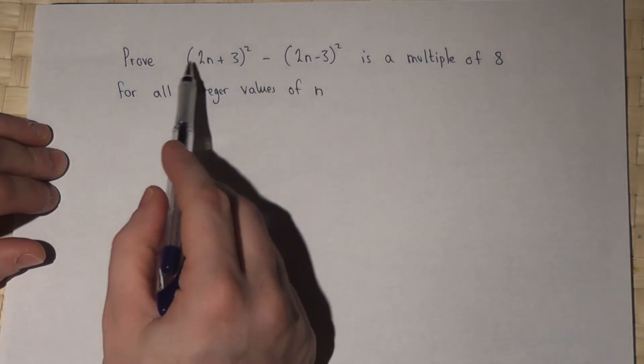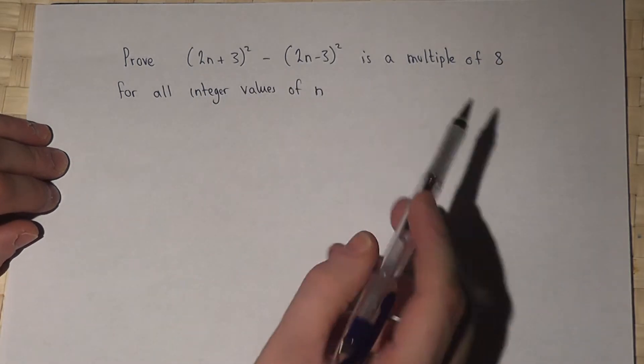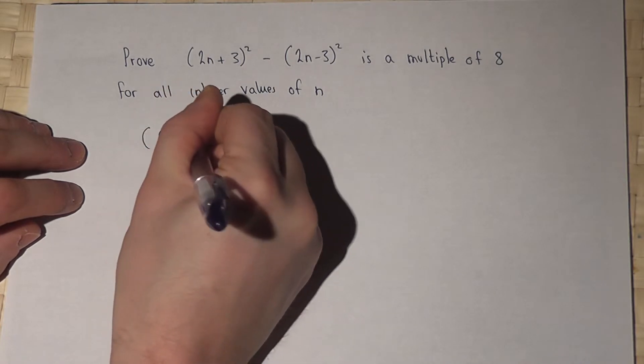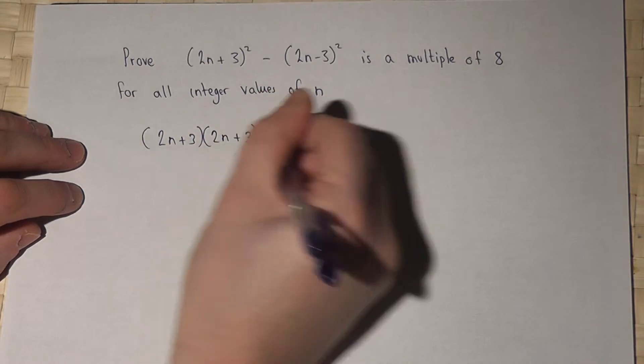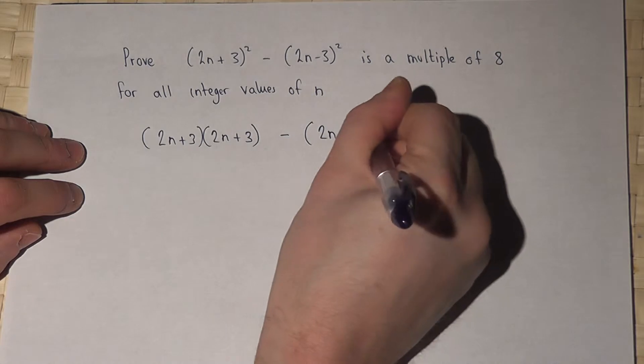Now the method here is to expand both brackets and to simplify and to see what happens. So I've got 2n plus 3 all squared, which of course means that, take away 2n minus 3 all squared, which equals that.